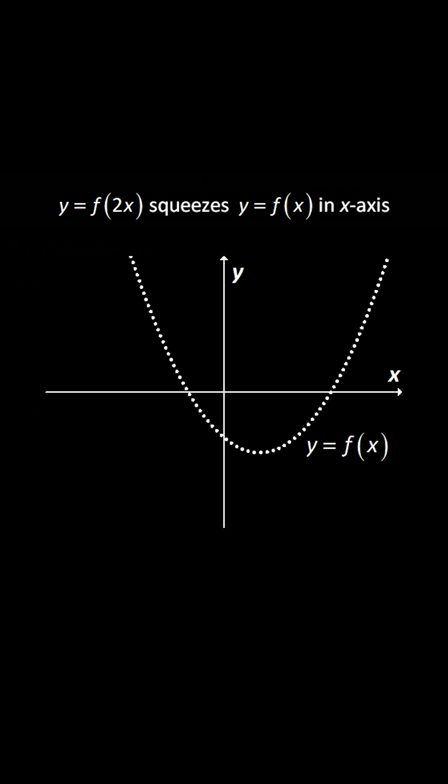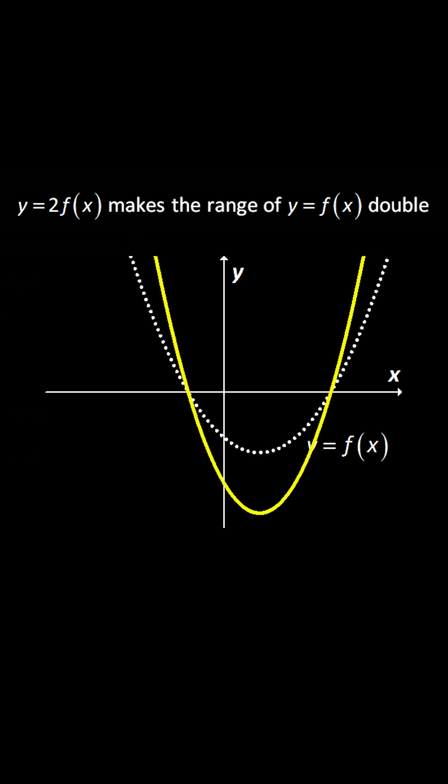Rule seven says y equals f(2x) squeezes y equals f(x). Rule eight, if y equals two times the whole function f(x), this makes the range of y equals f(x) double.